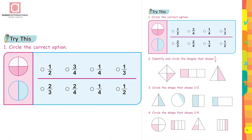As you can see in the picture, we can write one third as one upon three. Now circle the correct option. Look at the first picture — it is a circle divided into four equal parts. Two parts are colored and two parts are white. Which is the correct fraction: one upon two, three upon four, one upon four, or one upon three?